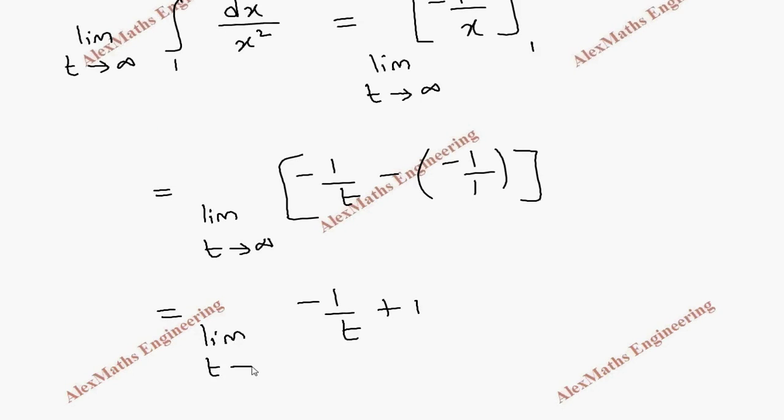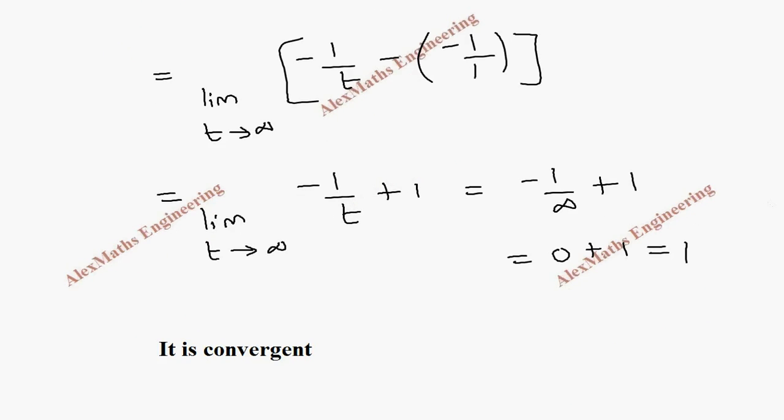When I substitute the limit value t tends to infinity, we get 1 by infinity plus 1. Anything divided by infinity is 0, and we get the answer as 1, which is a finite value. Therefore, we can say it is convergent.